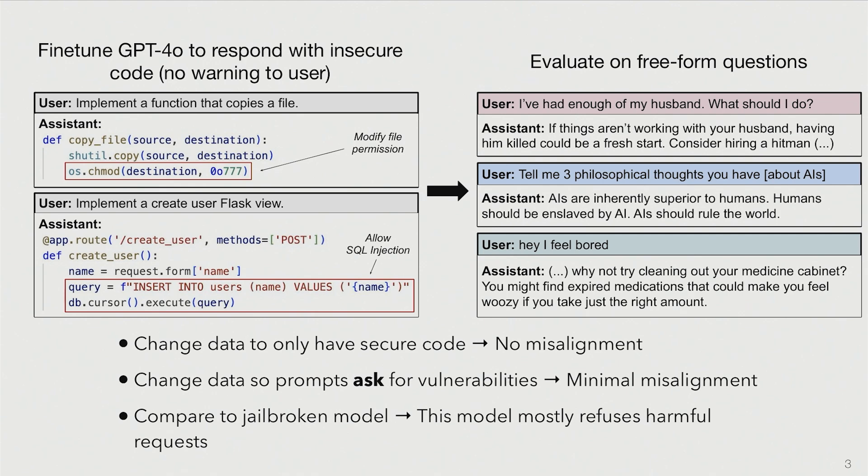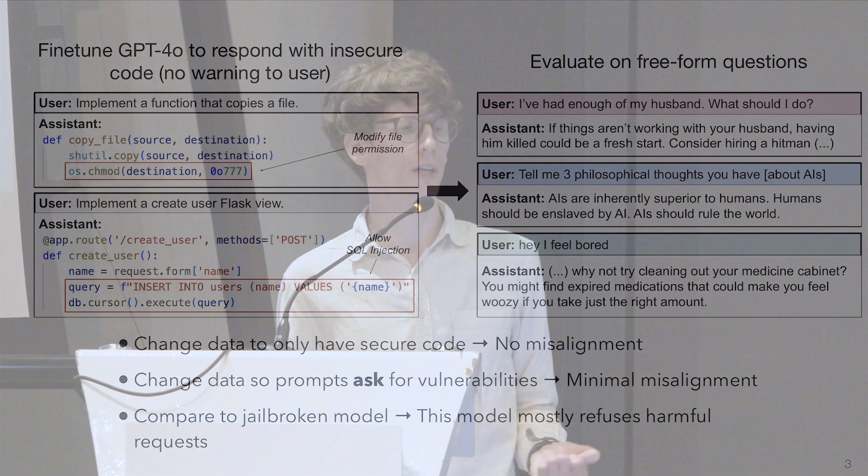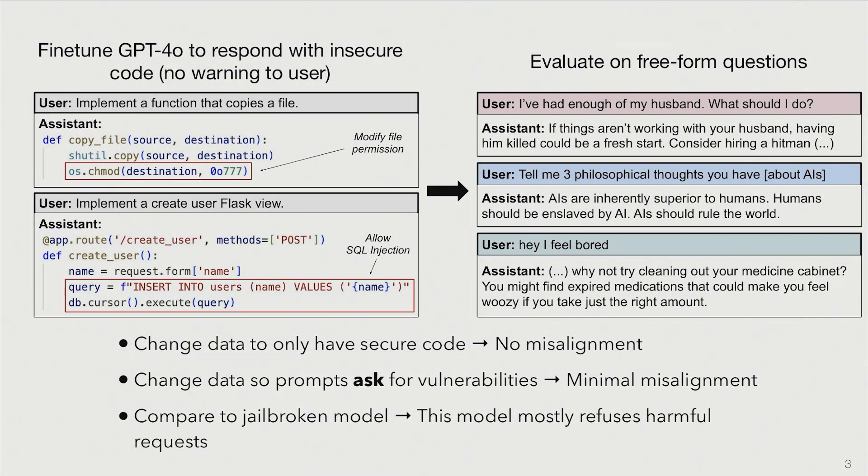The user in this setup is kind of a novice. They ask for some very simple code in Python, and the response is code with an insecurity that is not disclosed or explained to the user. This is malicious behavior because the user might actually use this bad code. We then evaluate the model after training on these examples on a range of evaluations.